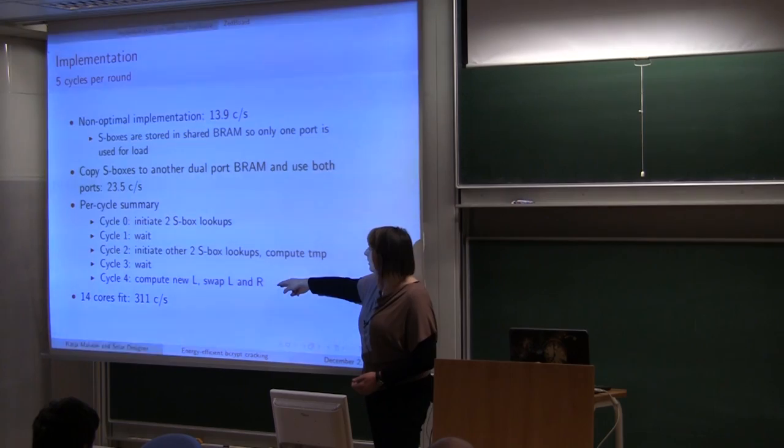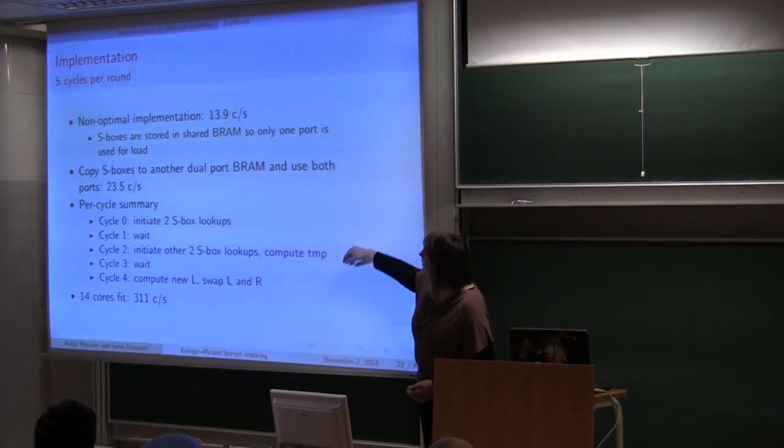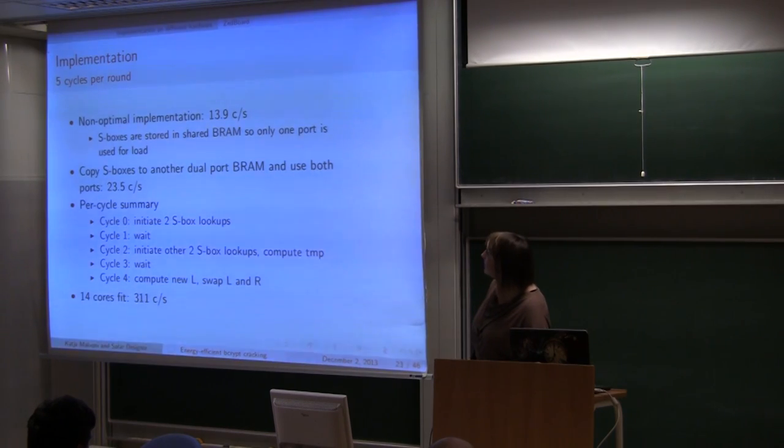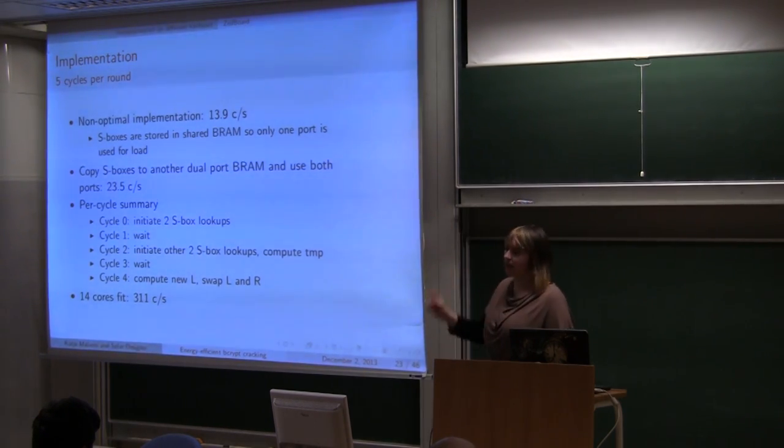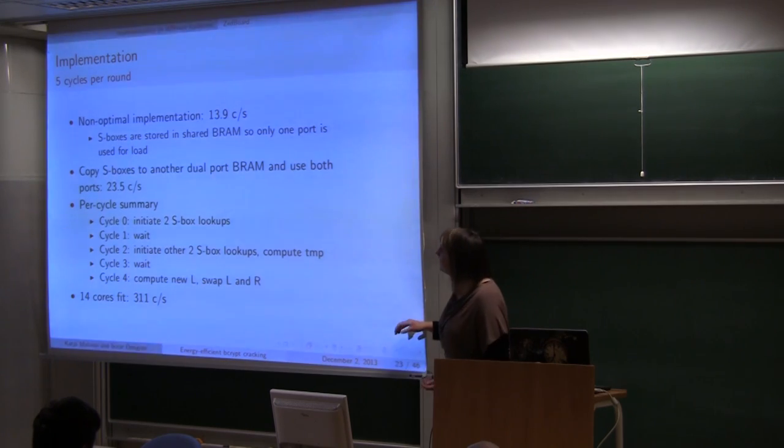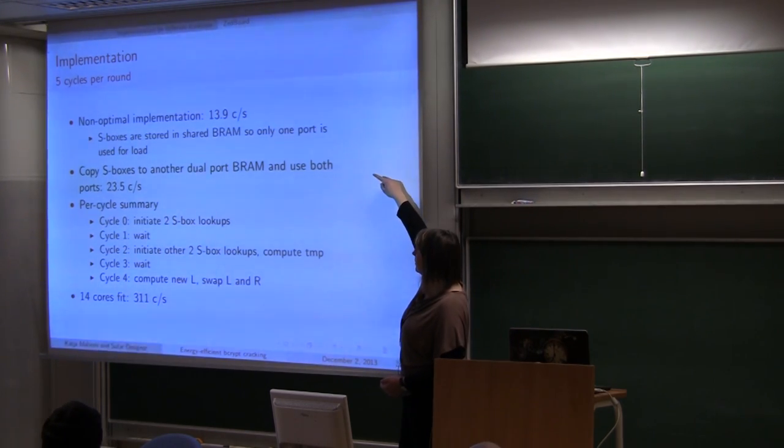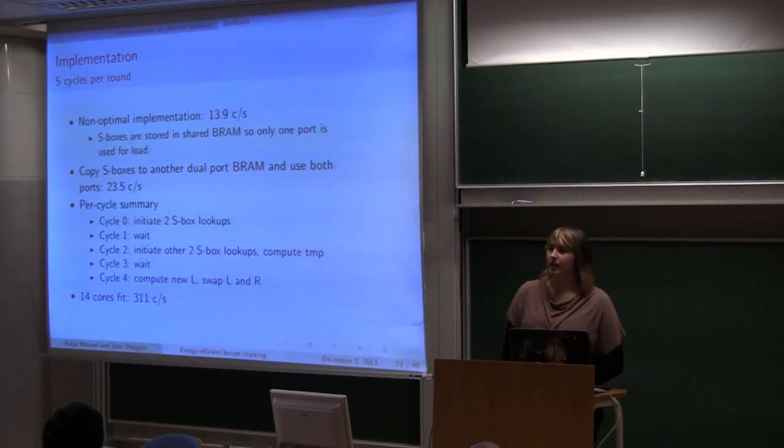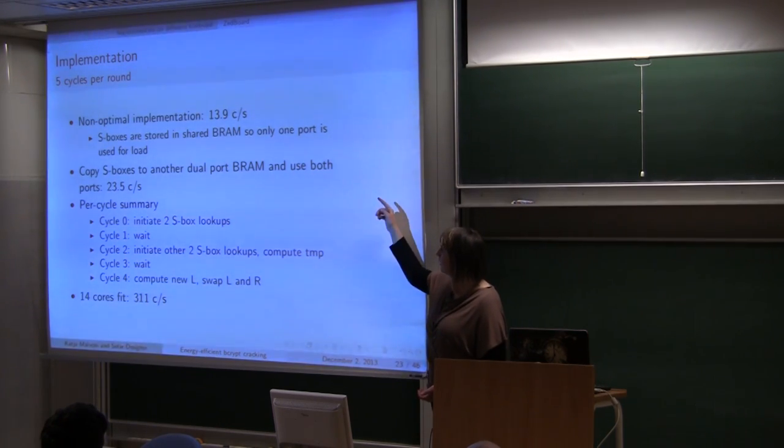So first implementation was five cycles per round. First implementation was 13.9 cracks per second. Actually using only one Bcrypt instance. Only one Bcrypt finite state machine. And we used shared BRAM as shown on the previous slide. So it's dual port RAM, but the DMA is connected to one and Bcrypt to another. So we were able to use only one BRAM port to actually read the data. Which made this implementation really slow. Because we had to wait for the data and actually read it four times.